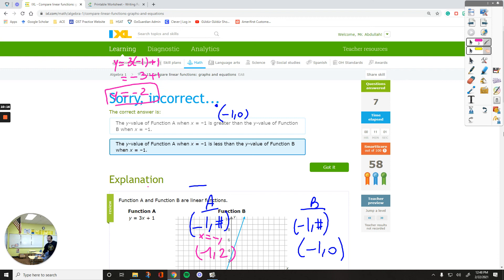What did I do wrong? Negative 2. Oh, that was negative 2. I see what I did wrong. Y was equal to negative 2. It wasn't positive 2. So this was supposed to be negative 2. As I had the negative over here. So that means the value of function A is going to be less than the y value of function B.